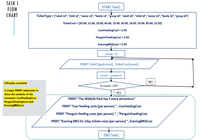Finally, we're going to display the constants. Print: 'The wildlife park has three extra attractions.' Print lion feeding cost per person and the lion feeding cost value. Print penguin feeding cost per person and the penguin feeding cost value. Print evening barbecue for two days, cost per person, and the evening barbecue cost value.